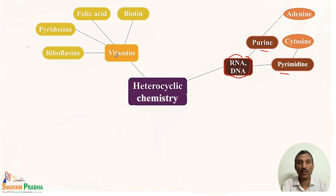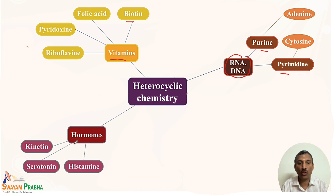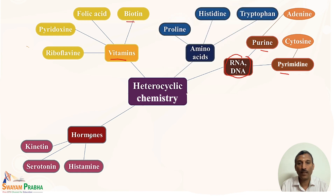Another important class is vitamins: riboflavin, pyridoxin, folic acid, biotin, etc., all have a heterocyclic ring. When we talk about hormones, kinetin, serotonin, and histamine all contain a heterocyclic ring. And for amino acids, proline, histidine, and tryptophan all have a heterocyclic ring.